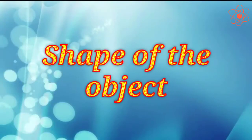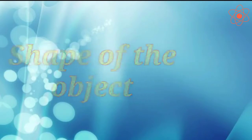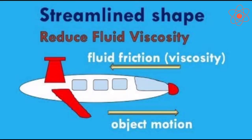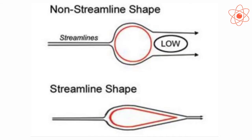Fourth — shape of the object. Objects having streamlined shapes face much less frictional force than objects which do not have streamlined shapes. A streamlined shape is a special shape which is pointed at the ends and broad at the middle.